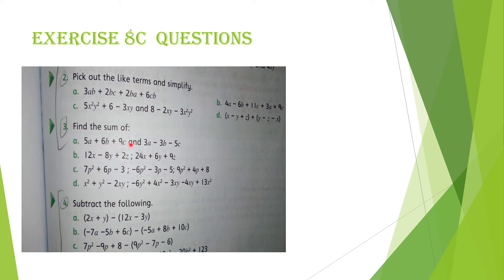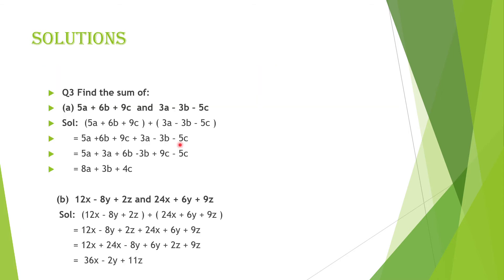Question number 3 ka A part: Find the sum of 5a plus 6b plus 9c and 3a minus 3b minus 5c. Dono bracket mein likhni hain, darmiyaan mein plus ka sign. Pehli expression as it is aa jaegi. Doosri bhi as it is aa jaegi kyunki plus sign se koi bhi sign multiply karen to sign wahi rahega — minus 3b bhi minus rahega, minus 5c bhi minus rahega.